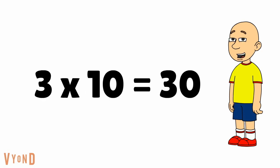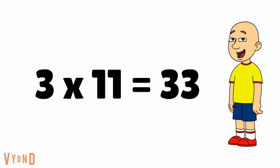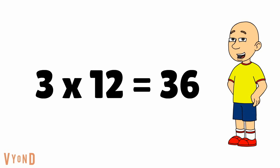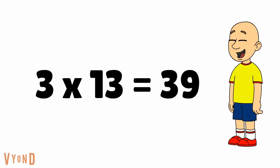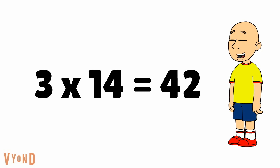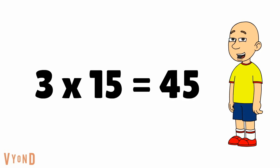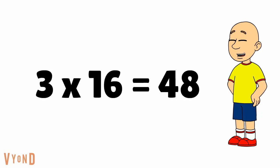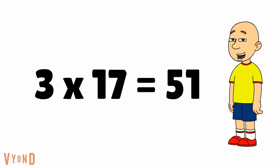3 times 10 equals 30. 3 times 11 equals 33. 3 times 12 equals 36. 3 times 13 equals 39. 3 times 14 equals 42. 3 times 15 equals 45. 3 times 16 equals 48. 3 times 17 equals 51.